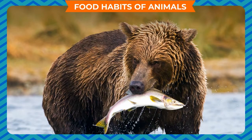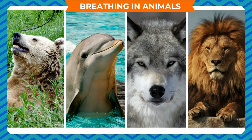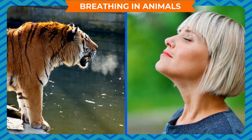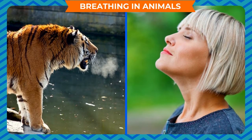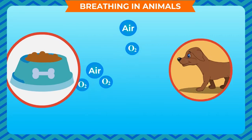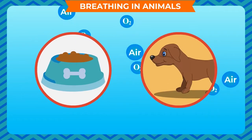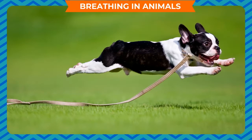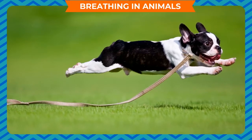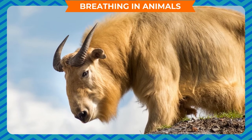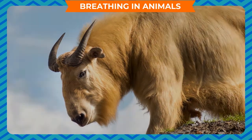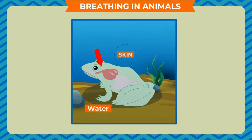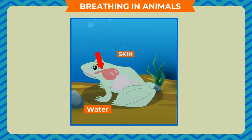Breathing in animals: all animals and human beings breathe in air. Oxygen present in the air is needed to break down the food in the body to get the energy that animals use to do various activities. Land animals breathe in oxygen from surrounding air through lungs, while aquatic animals breathe in oxygen dissolved in water through their skin or gills.